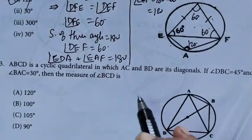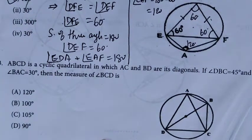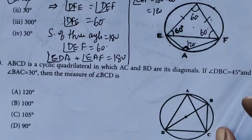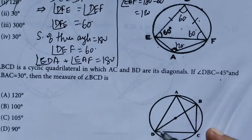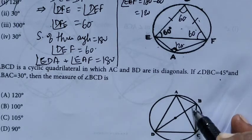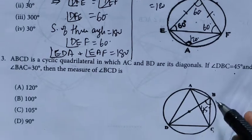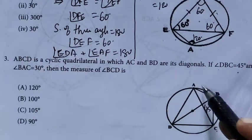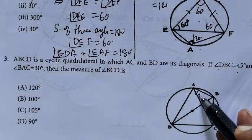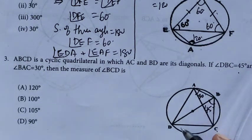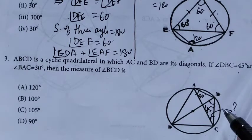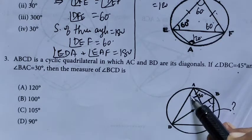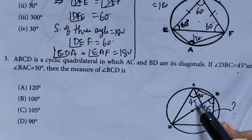ABCD is a cyclic quadrilateral in which AC and BD are its diagonals. Given DBC equals 45 degrees and BAC equals 30 degrees. BCD is the question mark. We know this angle is 45 degrees.